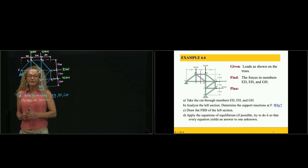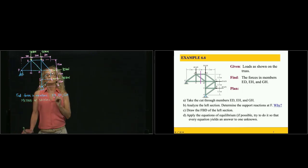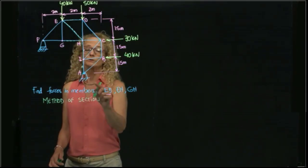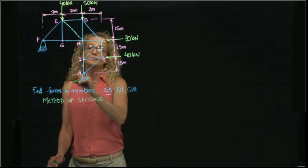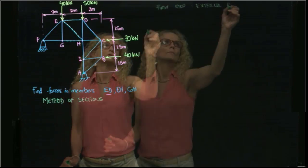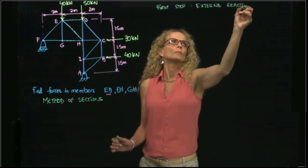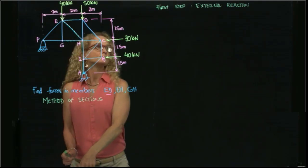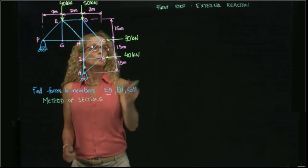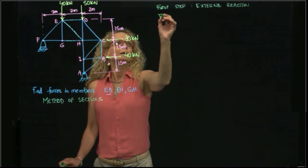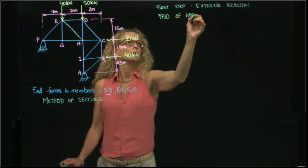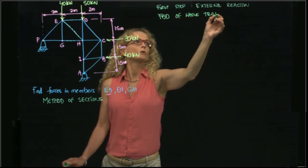We will do a cut to find those members. However, the first step in the section method is to find the external reactions. To do that, we will do the free body diagram of the whole truss.